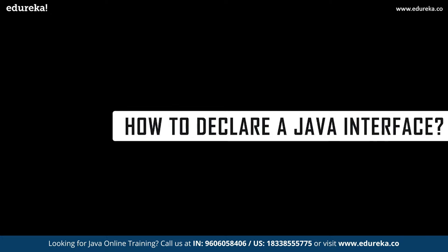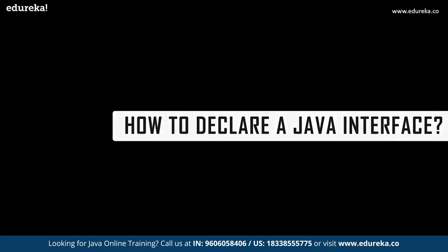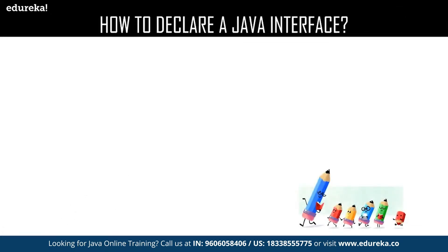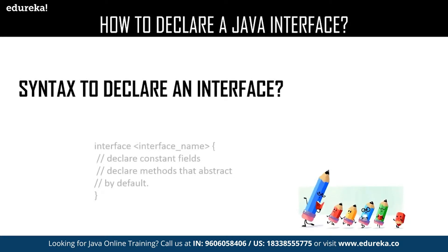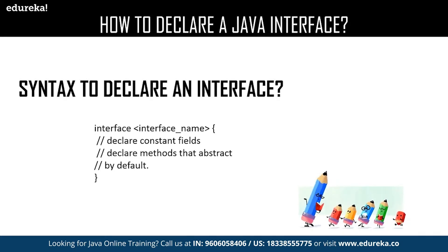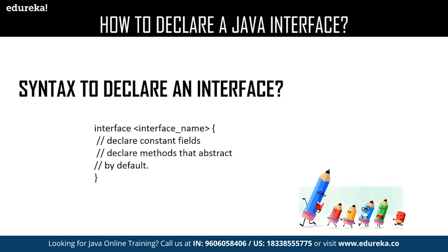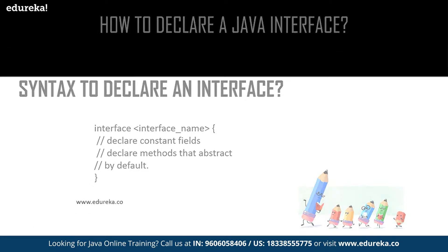Let us have a quick revision about how to declare an interface. This is the syntax for declaring an interface — you use the interface keyword followed by the name of your interface, and inside the interface you declare your methods. By default, all the methods you declare in an interface are considered to be public.